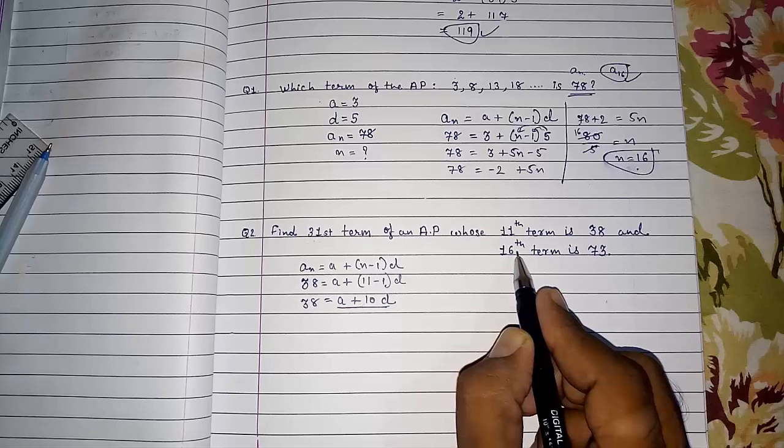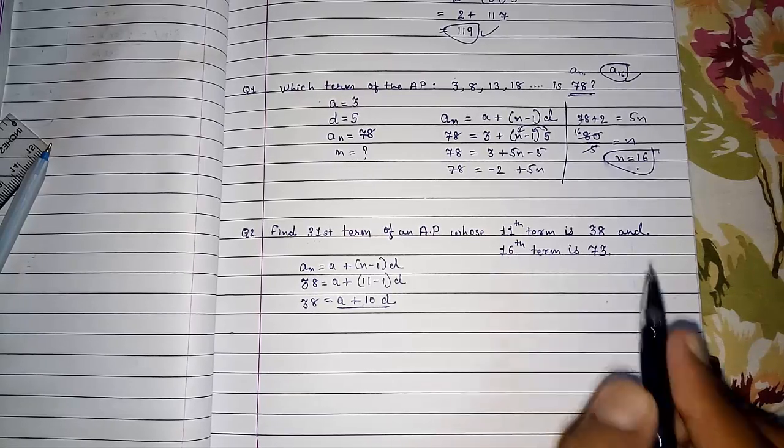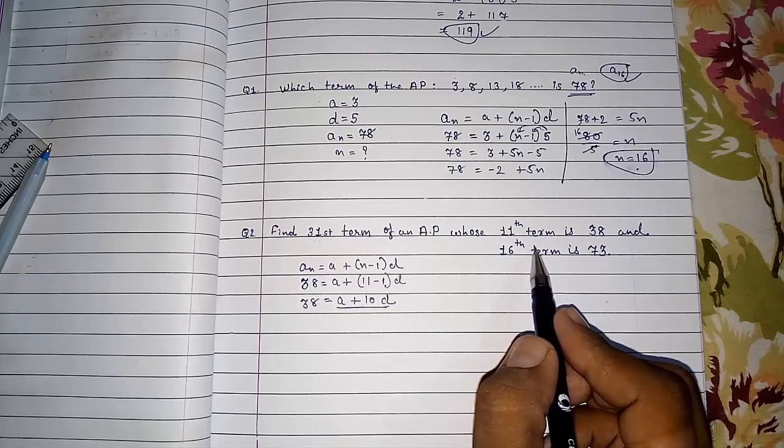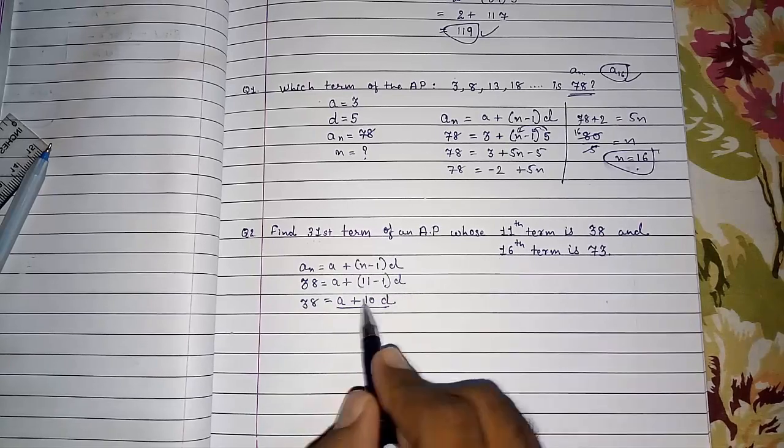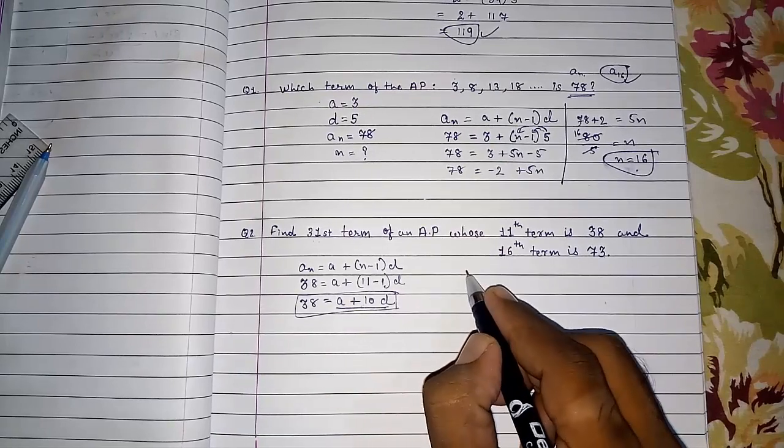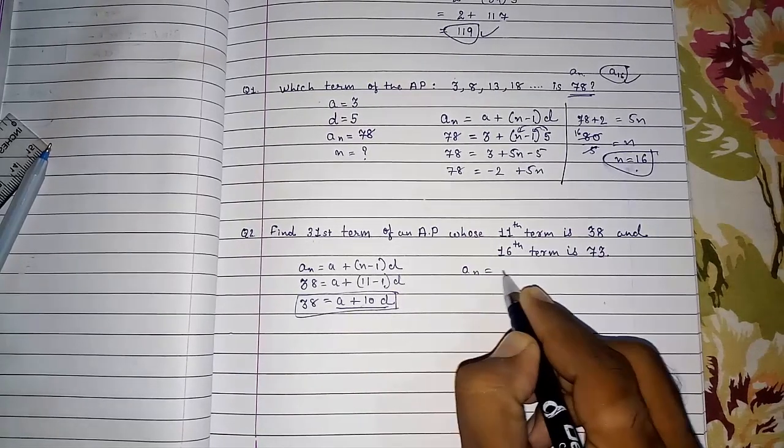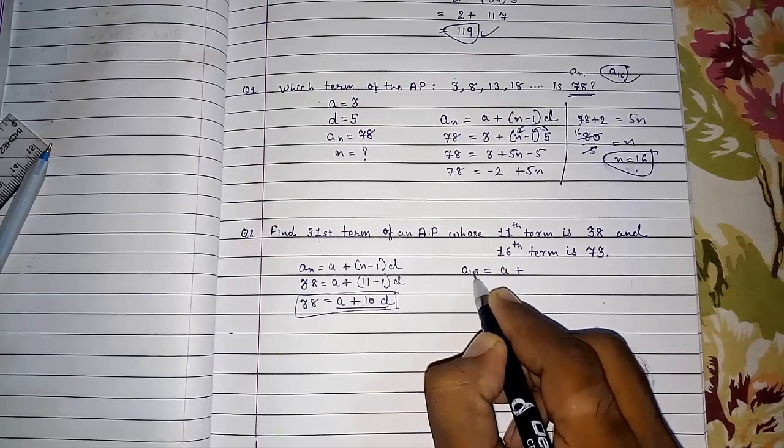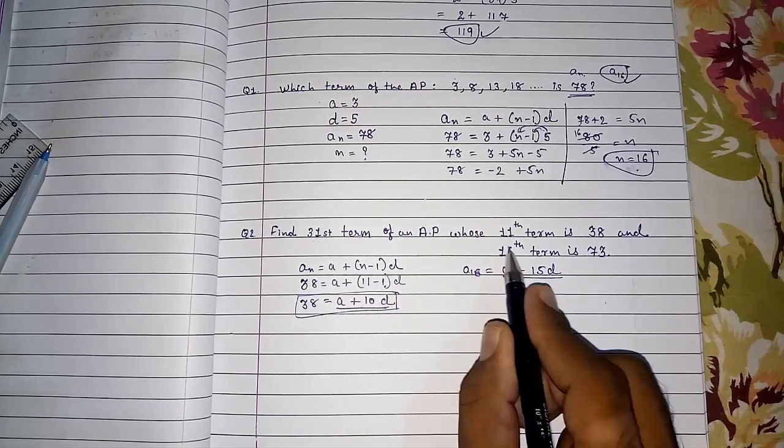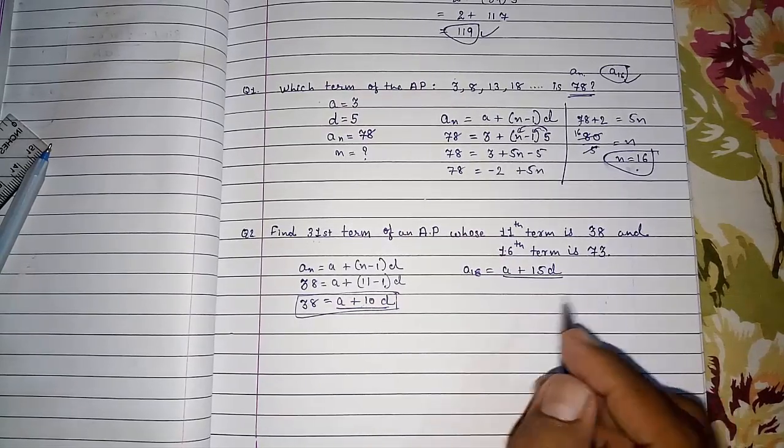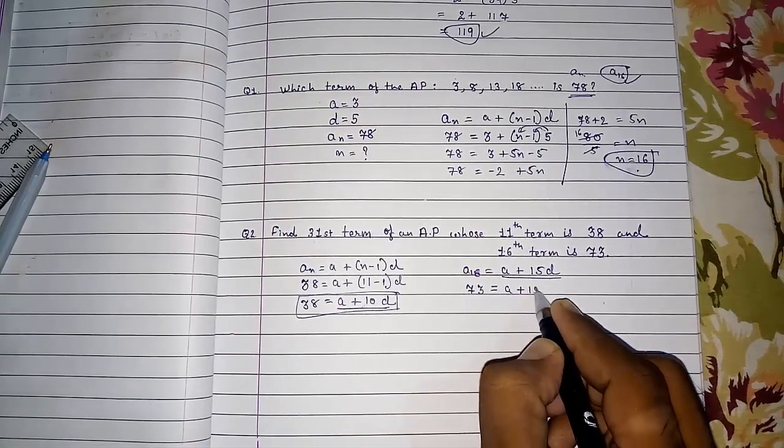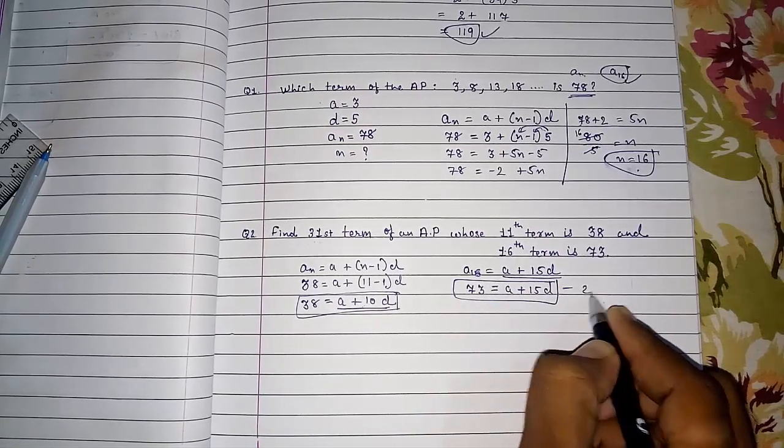AN equals A plus 15 D. Here 16th term. So what you are going to write, A plus 15 D. If they are giving you 20th term, find out the 20th term, then you have to write directly A20 will be A plus 19 D. Just you have to subtract 1 and keep it with D. Look here. This is your equation number 1. For 16th term I am writing directly. A16 is equal to A plus 15 D. Directly I am writing. Now 73 equals A plus 15 D. This is your equation number 2.